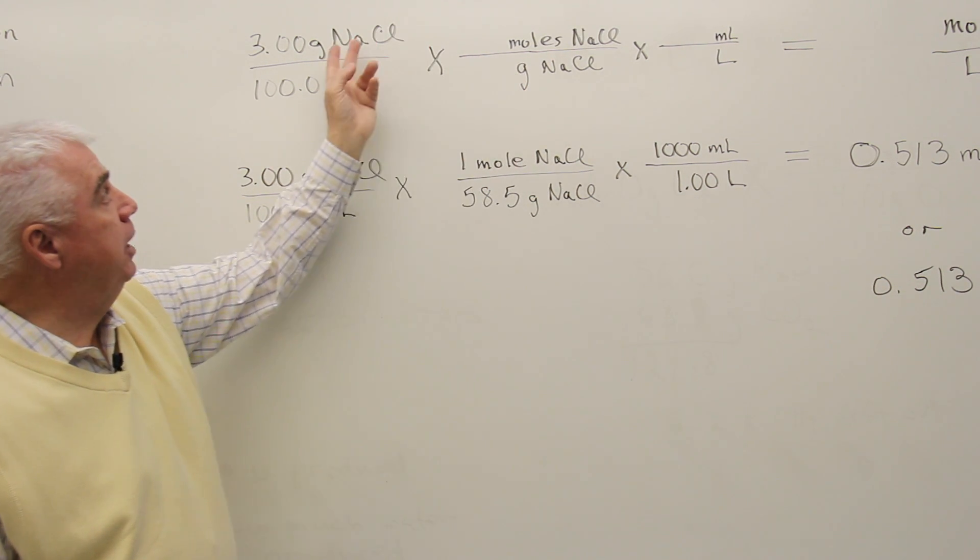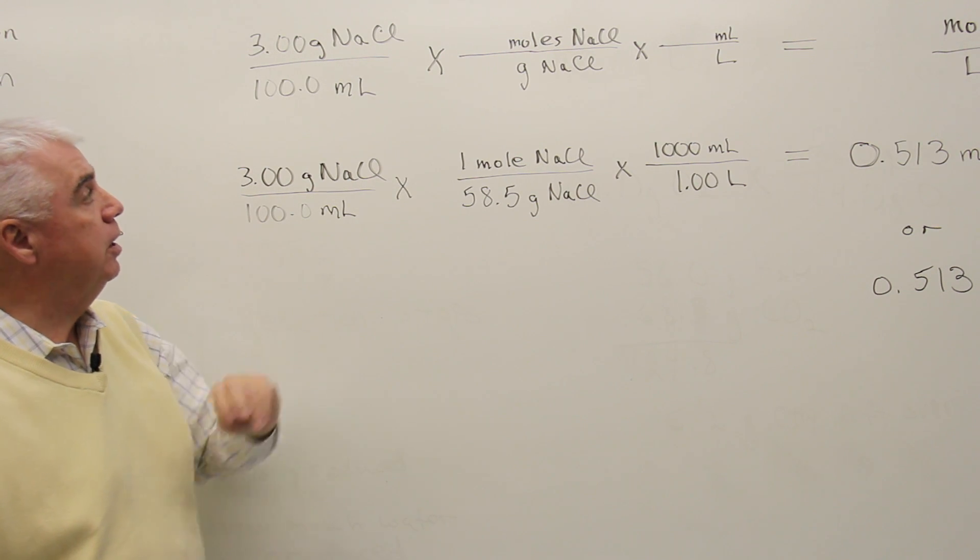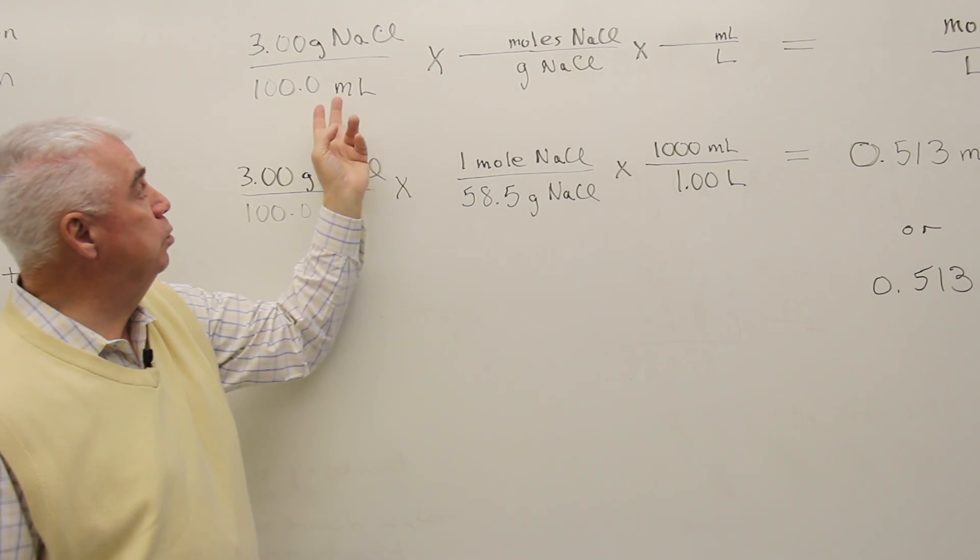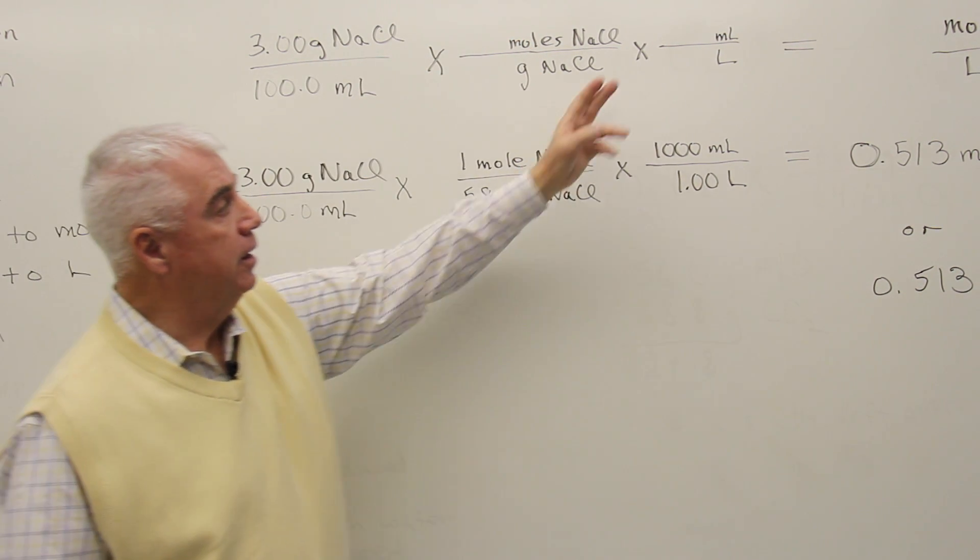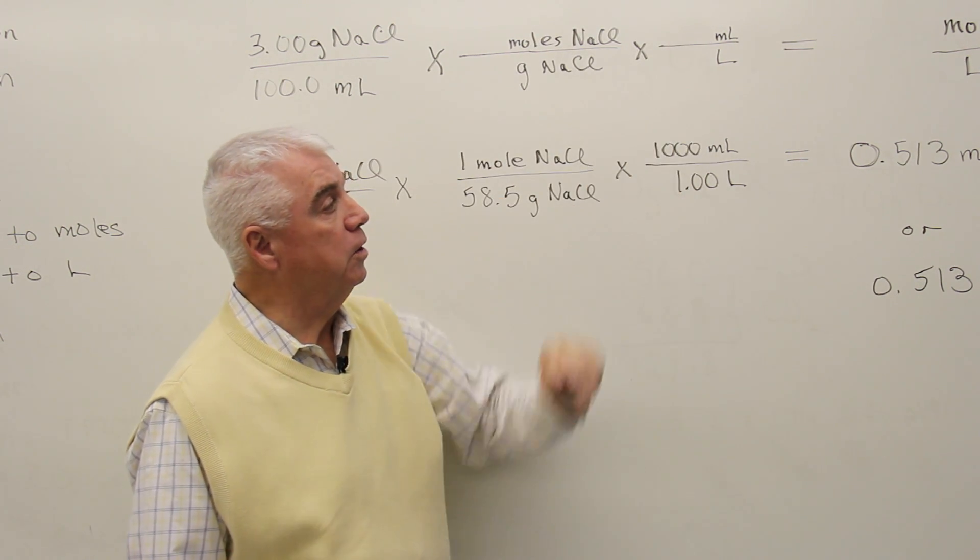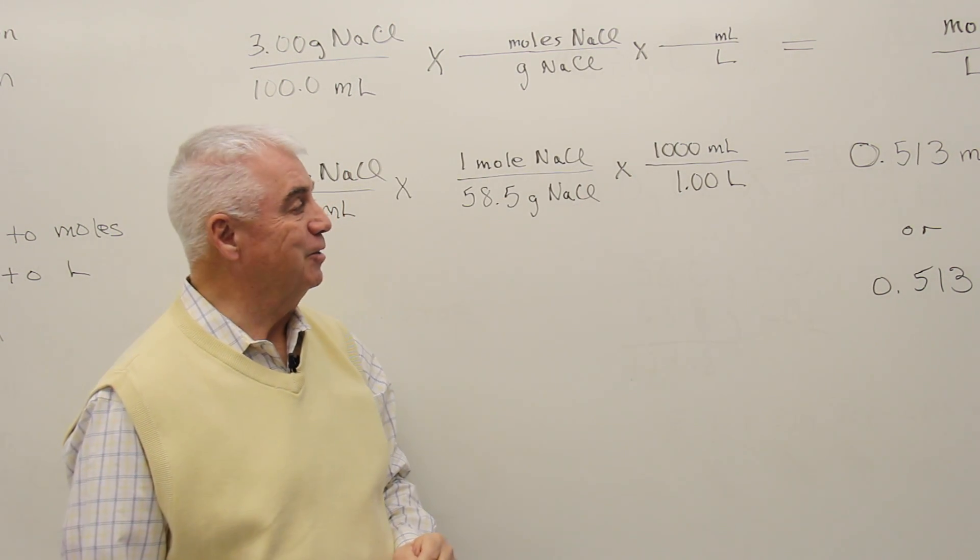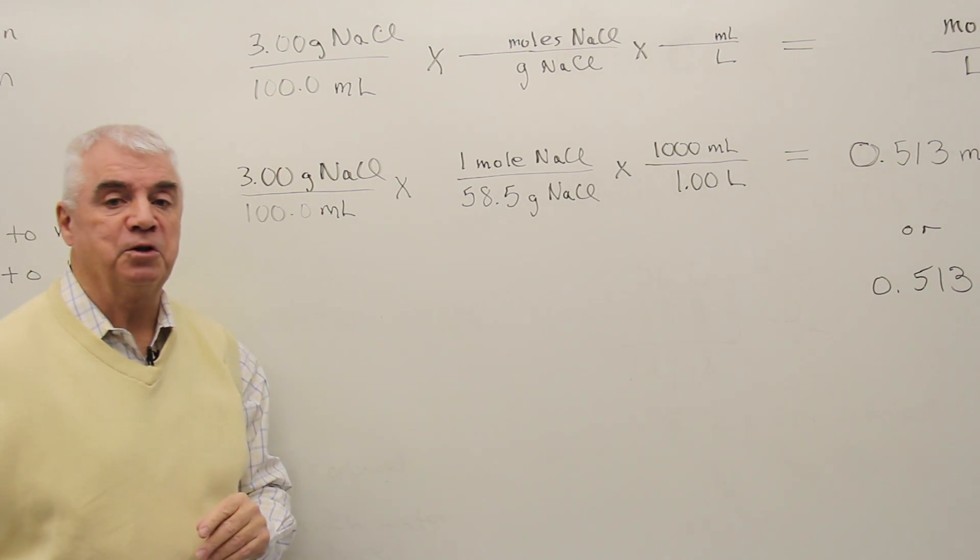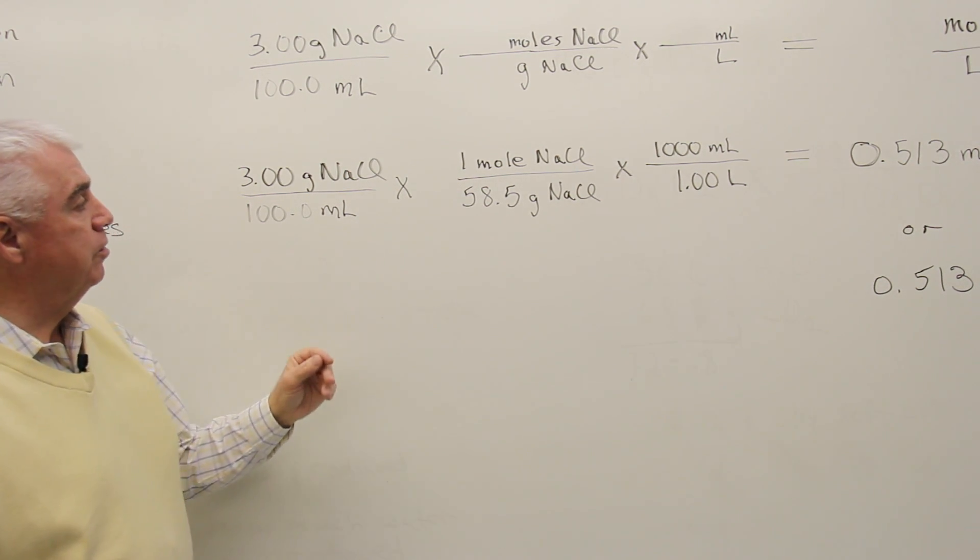Grams down here in the denominator will cancel the grams here. So at this point, we have moles per milliliter. And putting milliliters up here, milliliters are going to cancel, and we'll have the units liters. So let's fill in the numbers that we need and then work the problem.